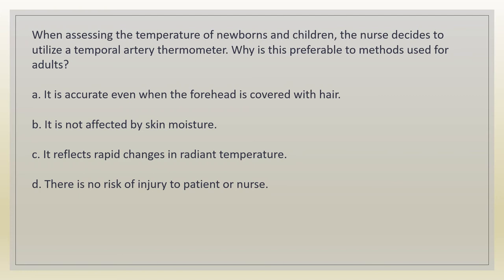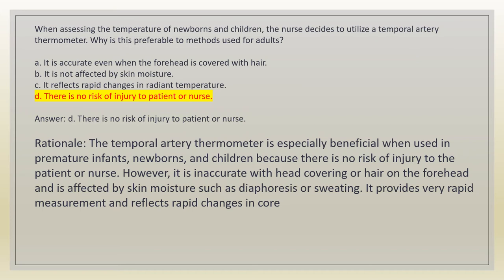When assessing the temperature of newborns and children, the nurse decides to utilize a temporal artery thermometer. Why is this preferable to methods used for adults? A. It is accurate even when the forehead is covered with hair. B. It is not affected by skin moisture. C. It reflects rapid changes in radiant temperature. D. There is no risk of injury to patient or nurse. Answer: D. Rationale: the temporal artery thermometer is especially beneficial in premature infants, newborns, and children because there is no risk of injury. However, it is inaccurate with head covering or hair on the forehead and is affected by skin moisture such as diaphoresis.